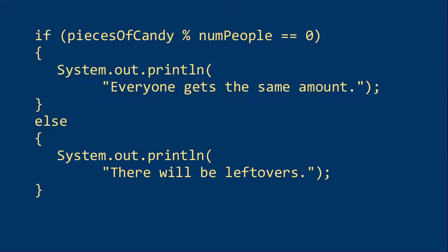So here's one example of using equals. If piecesOfCandy mod numPeople equals zero. So my number of pieces of candy is evenly divisible by the number of people I have. System.out.println, everyone gets the same amount. Else, system.out.println, there will be leftovers because I'm going to have some kind of a remainder. My remainder was not zero.